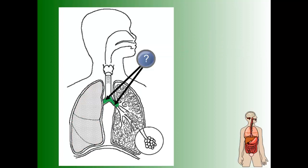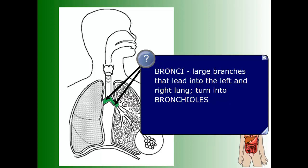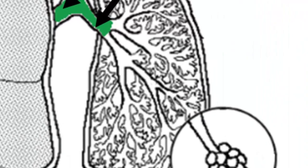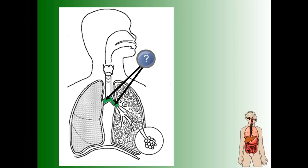The two branches that go from the trachea to either the left lung or the right lung are called bronchi. They're large branches that lead into the left and right lung, and they actually turn into bronchioles — smaller and smaller tubes that reach different areas of the lung, getting progressively smaller until they reach the smallest possible point.